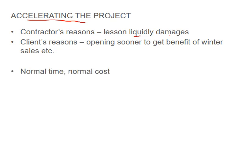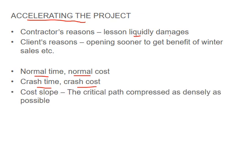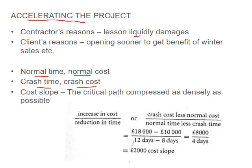The concept we're going to look at is simple: we're going to look at normal time and normal cost in contrast to crash time and crash cost. The cost slope is the critical path compressed as densely as possible — that's your cost slope.